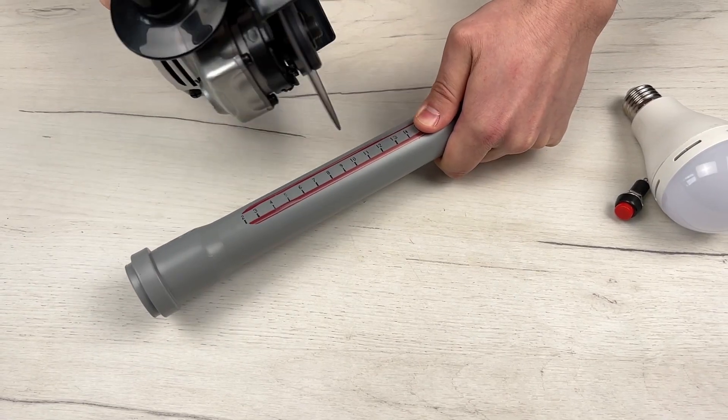To get started we need just a few simple materials: a regular LED light bulb, a plastic pipe, and an on/off button.